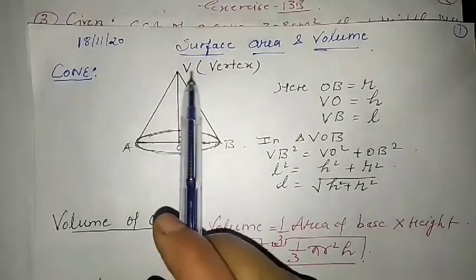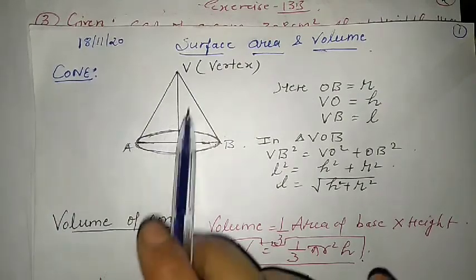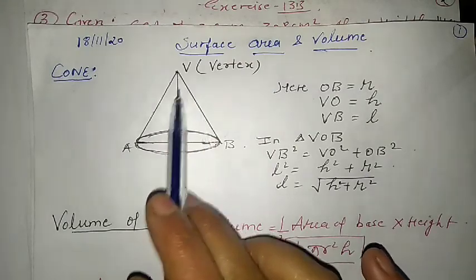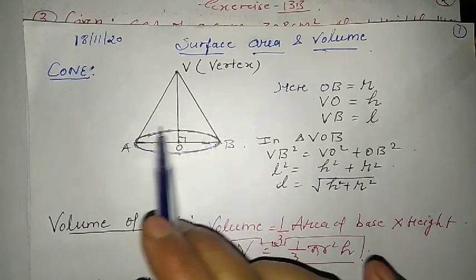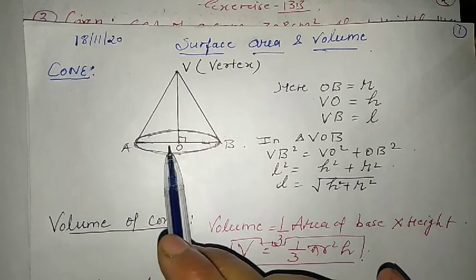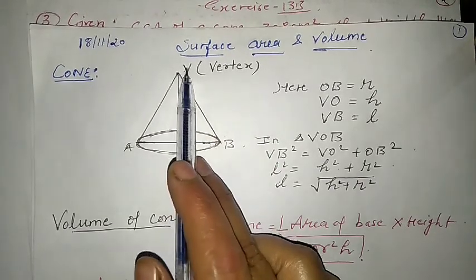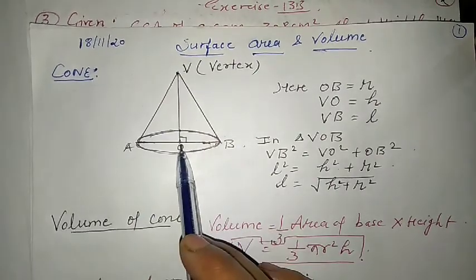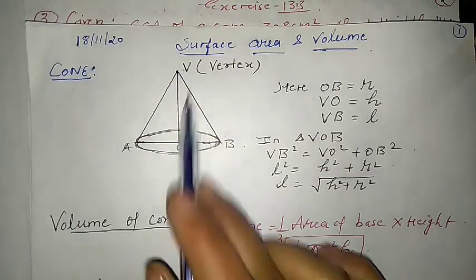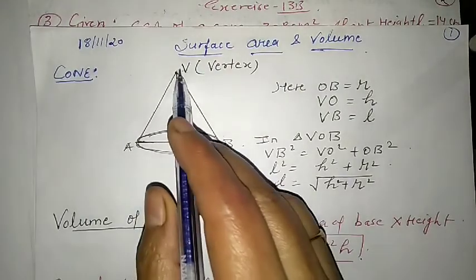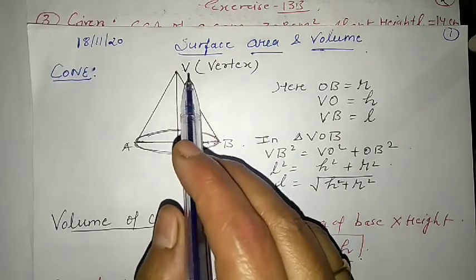Today we are going to start the same chapter Surface Area and Volume with a new topic - the cone. Here is a figure called a cone. Its base is a circle. If O is the center of the circle and V is the vertex of the cone, and VO is perpendicular to the circular base, then the cone is called the right circular cone.